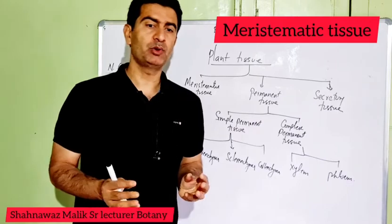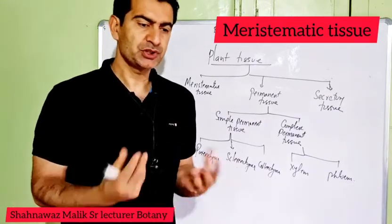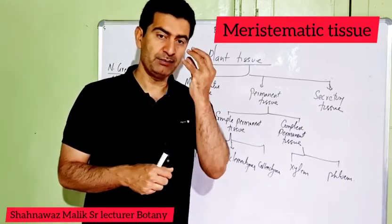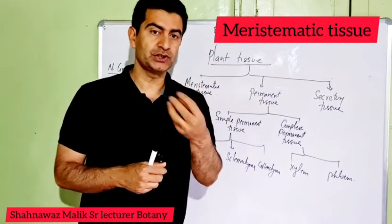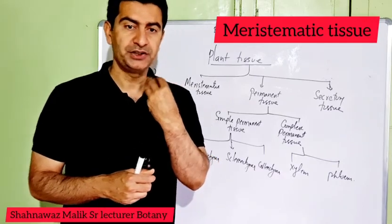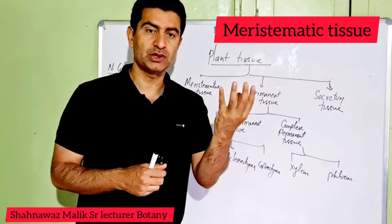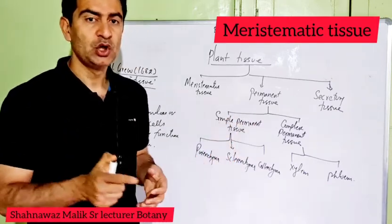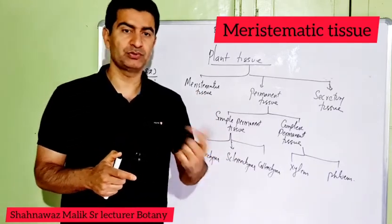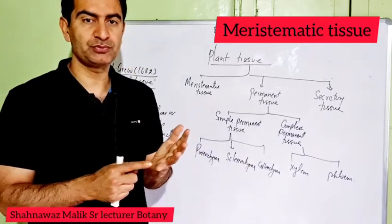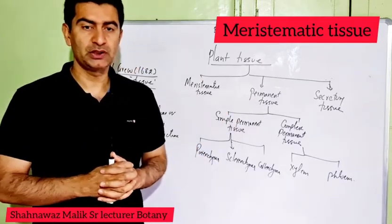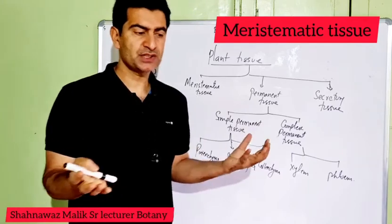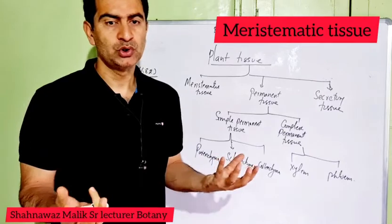A plant's body has a lot of tissues which can be different — the structure is different and the function is different. There are different tissues in plants; for example, root tissues perform the function of absorbing water, xylem tissues perform their own functions, leaf tissues perform the function of photosynthesis. So a plant's body has different tissues which perform specific functions.